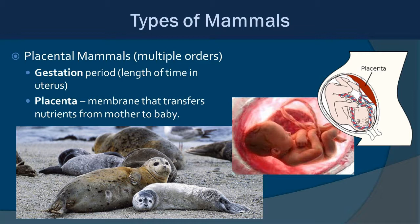You can see the diagram of the human and placenta on the right. Placental mammals generally all have a gestation period — a length of time in the uterus where they are utilizing the placenta and growing inside the mother.